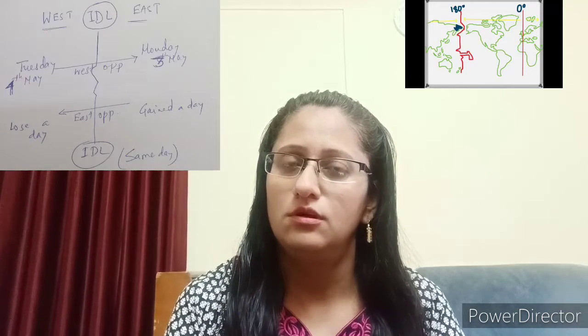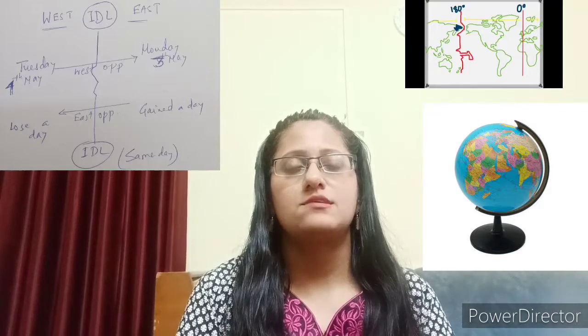The International Date Line is a reference point observed by the observatory in London, with the line passing through the Pacific Ocean. Now, how does it cause a calendar date change? Suppose a traveler is traveling from east to west and crosses the International Date Line — if they started on Monday, upon crossing they will experience Tuesday.